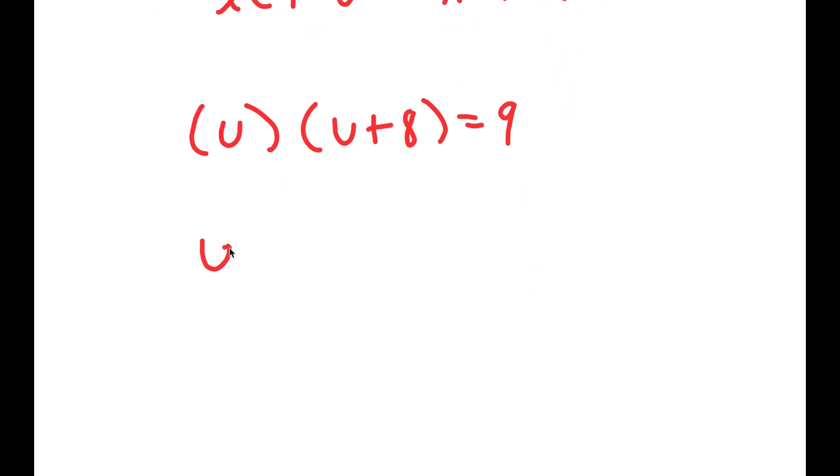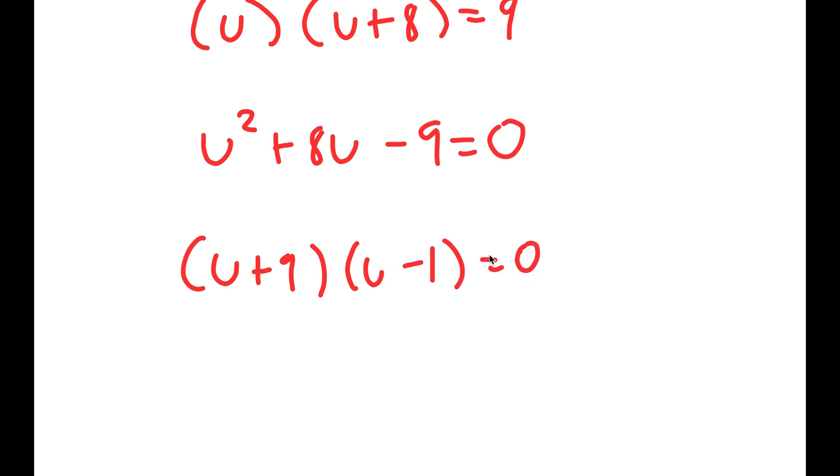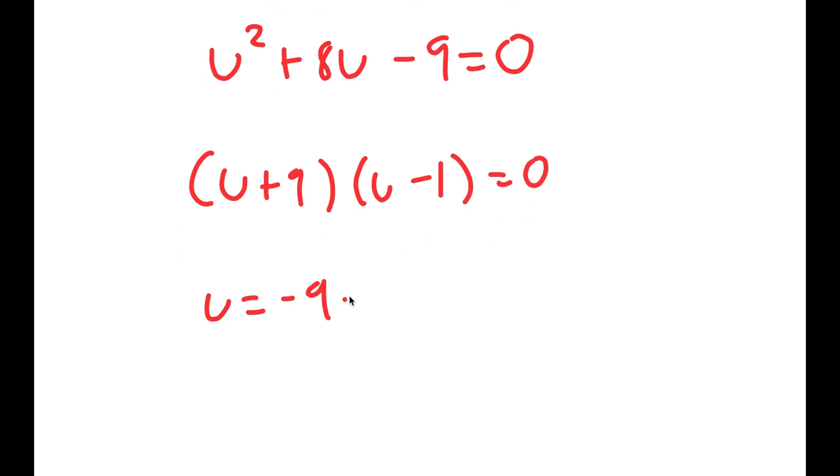This means that u² + 8u - 9 equals 0. If I factor this out, I get (u+9)(u-1) equals 0, meaning u equals -9 and u equals 1.